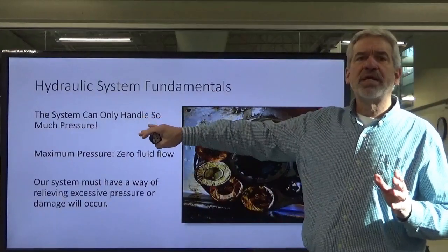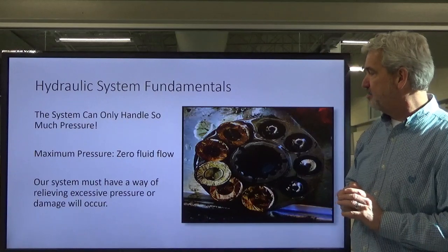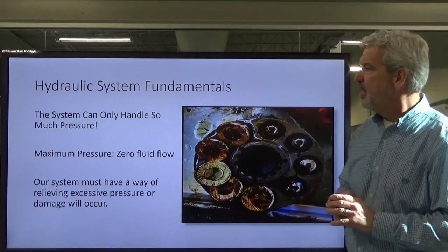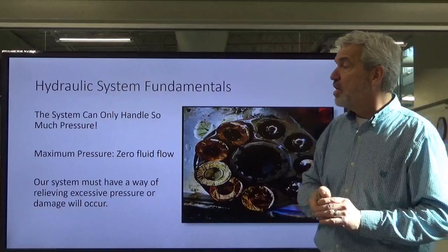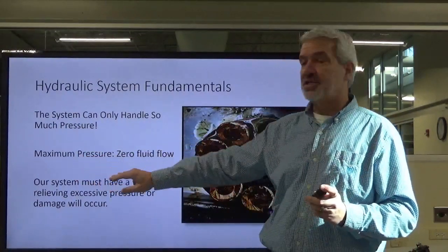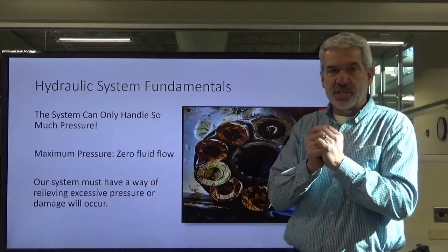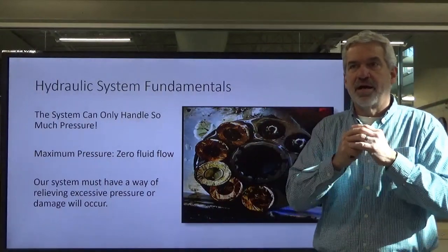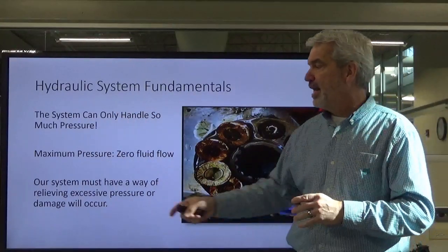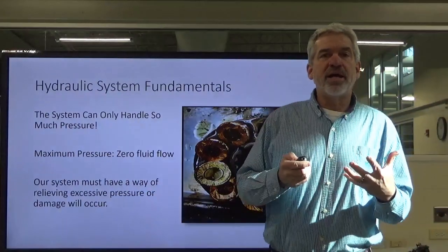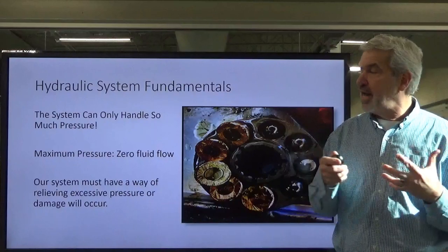A system can only handle so much pressure before damage occurs. This is a piston pump that has seen excessive pressure and has become damaged — you've lost some of the pistons off the ends of the rods. We can only create so much pressure before something has to give. That point is what we call maximum pressure — when we have zero flow, that is the maximum pressure the system will have. It is created by the pump trying to force the flow when there's nowhere to go, and that's when we start having damage. So we've got to have some way to relieve this pressure and save our system.